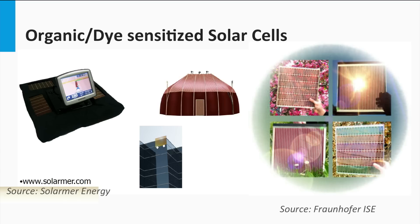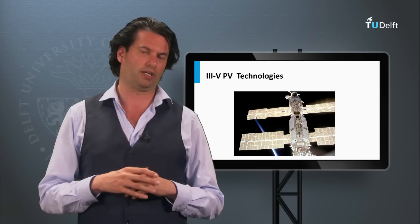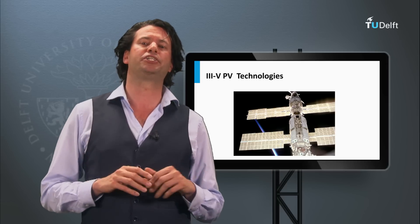Another thin film PV technology is based on organics, also referred to as the plastic solar cell. The absorption and charge transport in the solar cell occurs in conductive organic polymers or molecules. The dye-sensitized solar cell is a kind of photoelectrochemical system in which a semiconductor material based on molecular sensitizers is placed between a photoanode and an electrolyte. We will discuss both the organic and dye-sensitized PV technology in week 5.